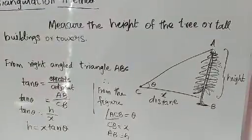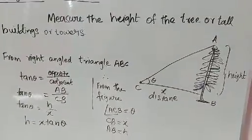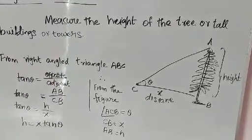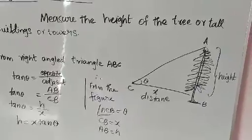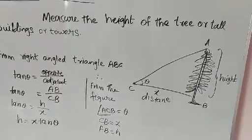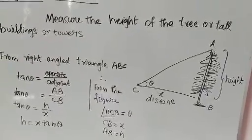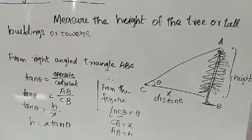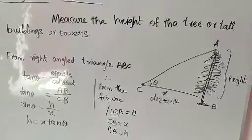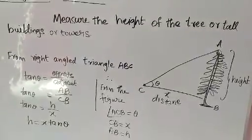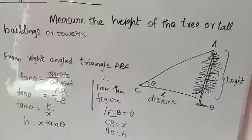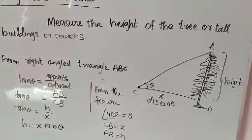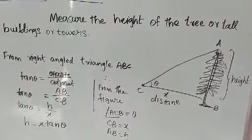This is a tall tree. AB is the height H. The observer is placed at point C, at a distance X from the tree. From the diagram, angle ACB is theta.